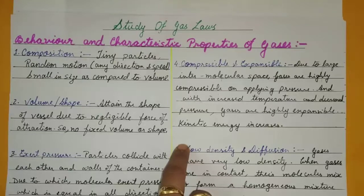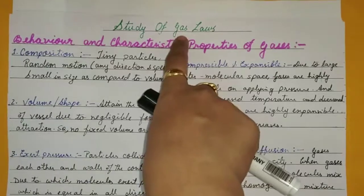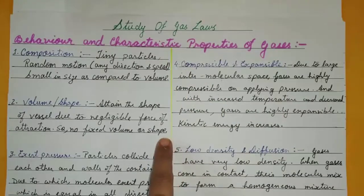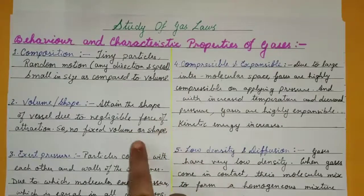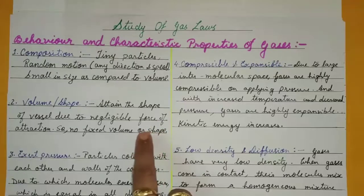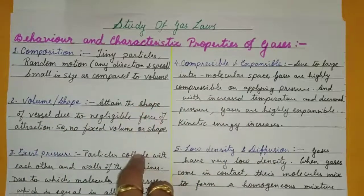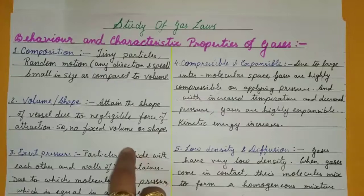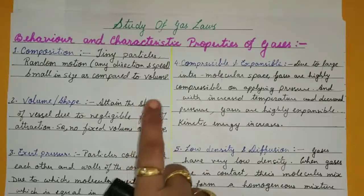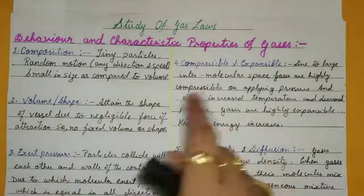As we all know, for a gas, if the inter-particle force of attraction is weak and the inter-particle space is large enough, the particles move randomly and the state is known as gas. We also know the properties of gases — it occupies the entire space available, taking the shape of the container, as the movement is restricted by the walls of the container.